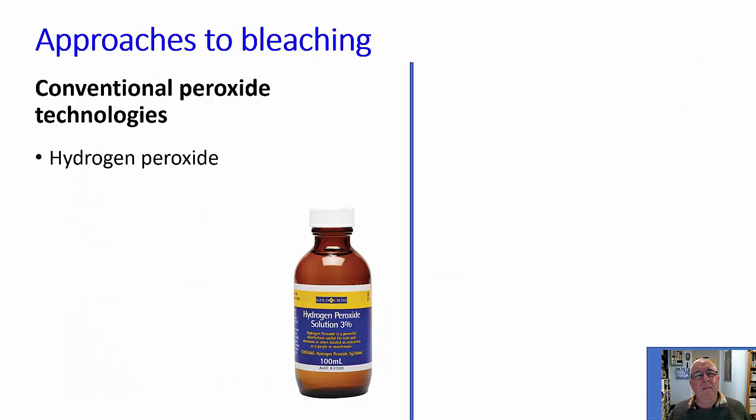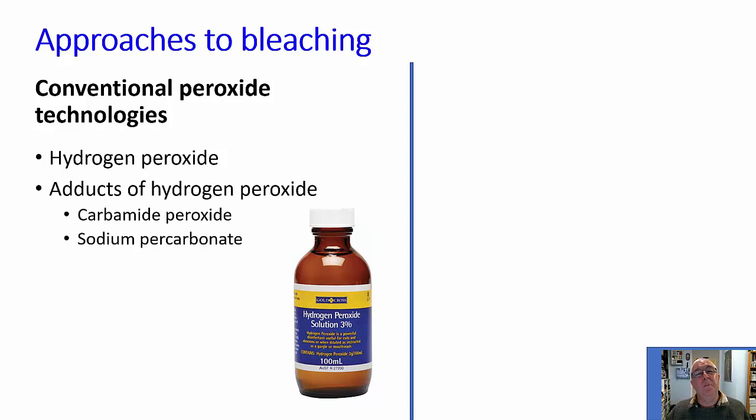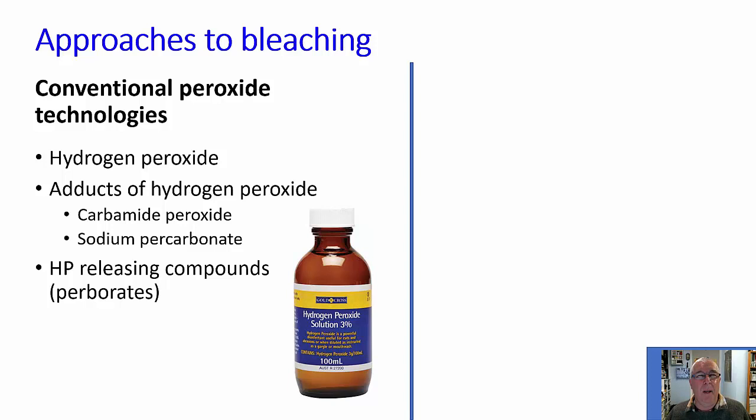When we think about conventional dental bleaching, we tend to think about chemicals that are based on or closely related to hydrogen peroxide. For example, the adducts of hydrogen peroxide, where one chemical is joined on and it then releases it, such as carbamide peroxide or sodium percarbonate. There are also hydrogen peroxide releasing compounds, such as the perborates, which tend to be used for non-vital tooth bleaching.